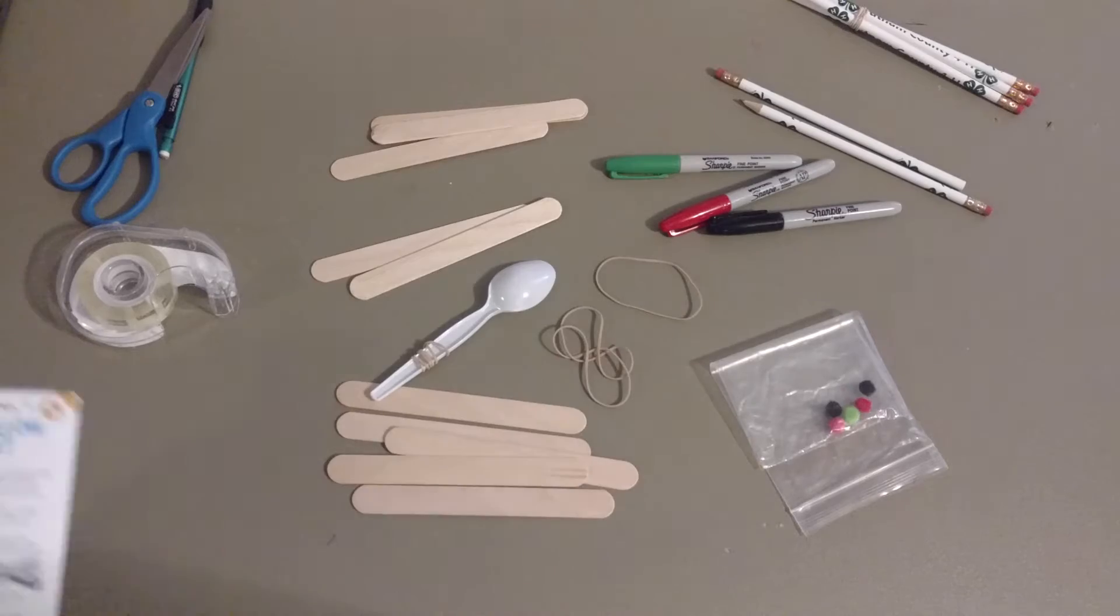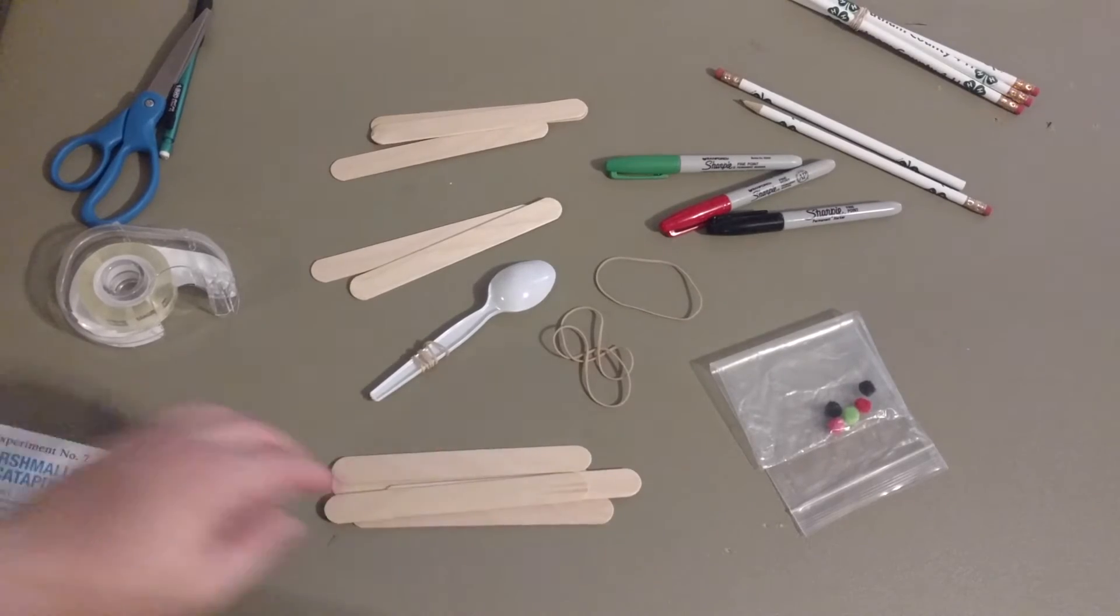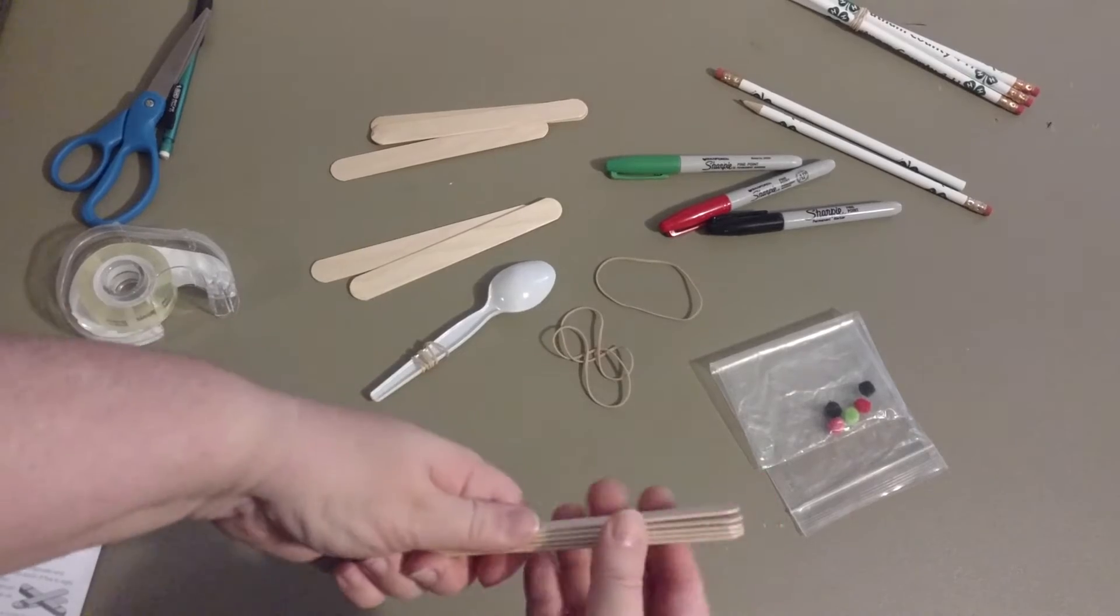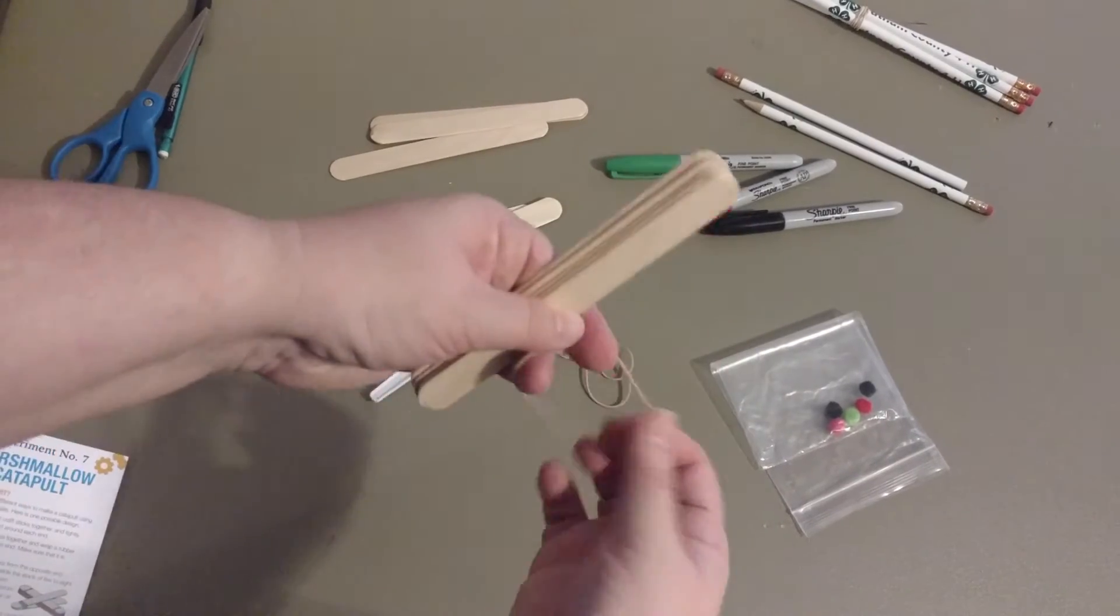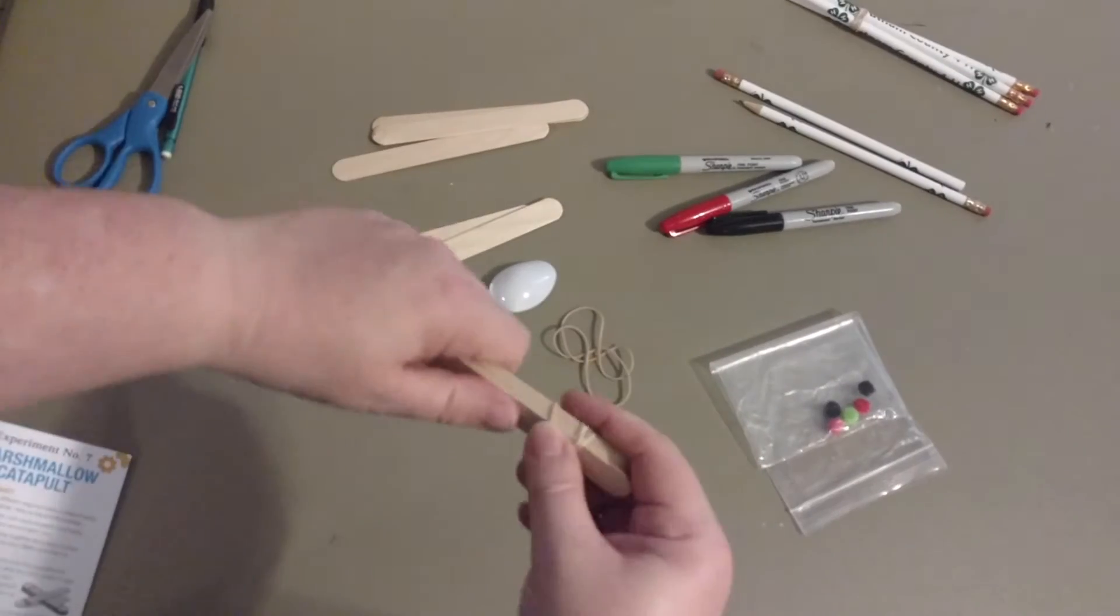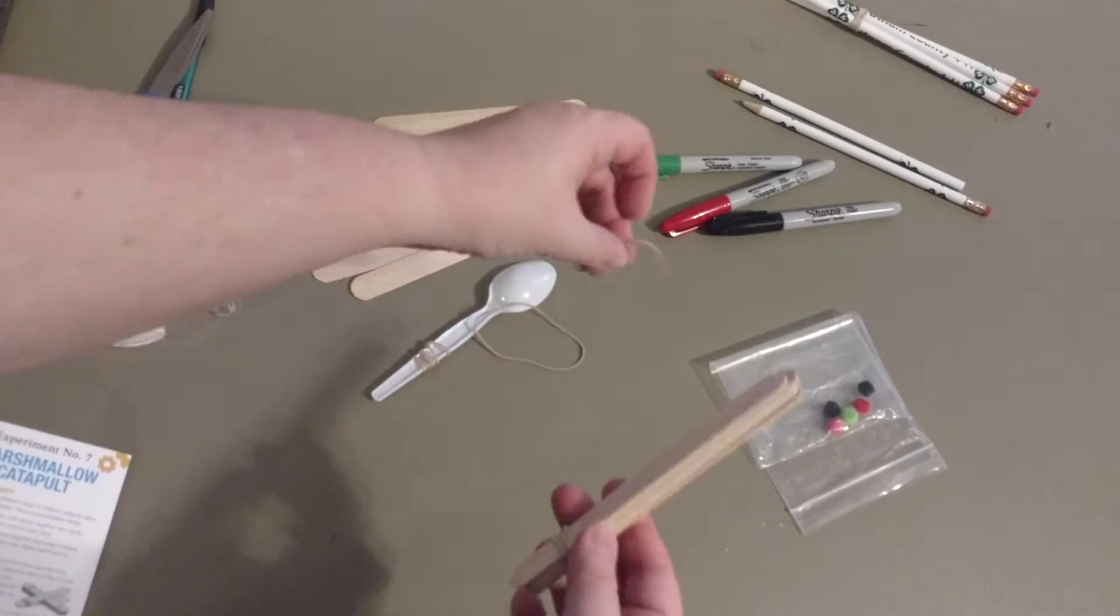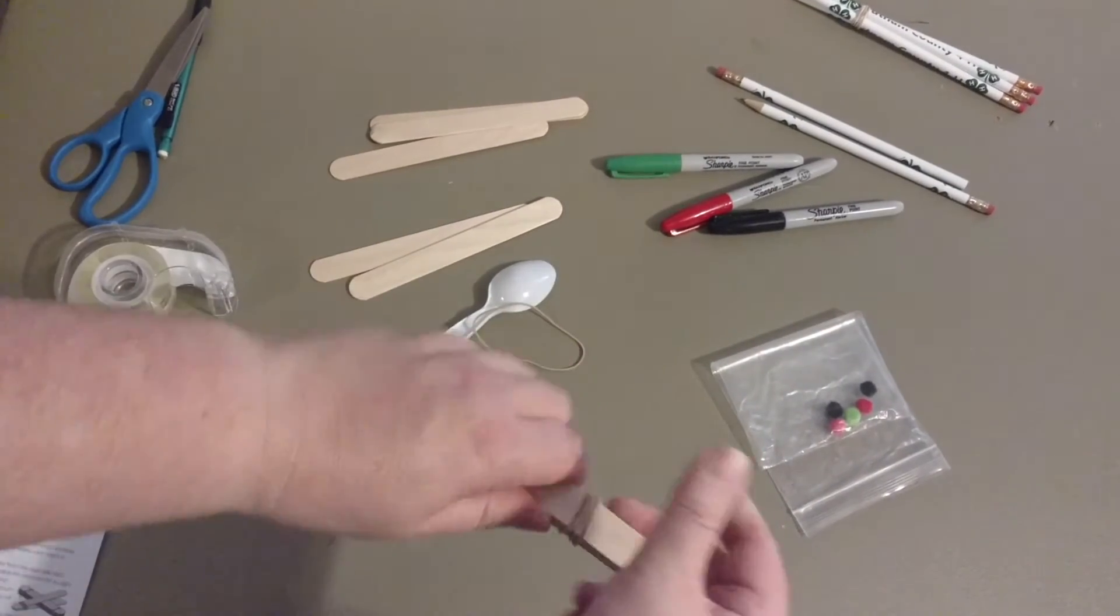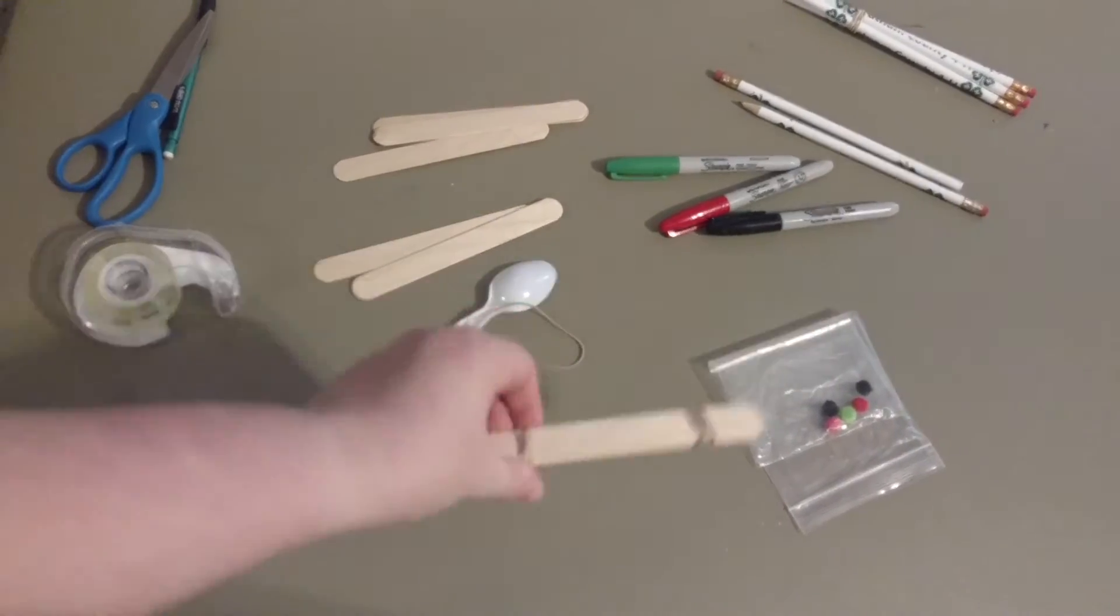What we're going to do is stack about five of these popsicle sticks together and rubber band them together. I'm going to twist my rubber band on one end, and then I'm going to twist and get it on the other end so I have something that looks like that.